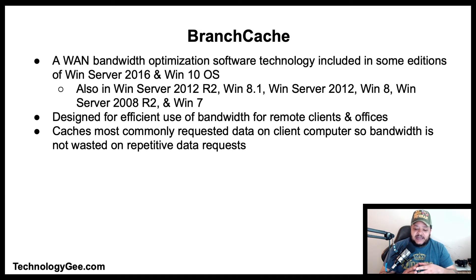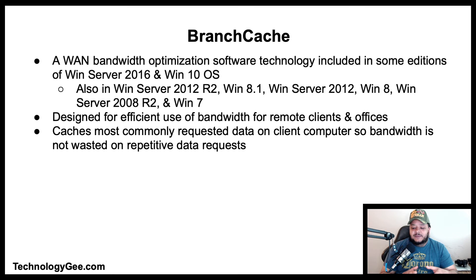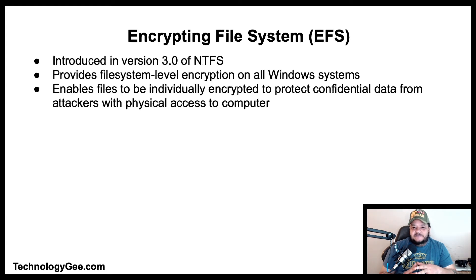BranchCache fetches content from your main office or hosted cloud content servers and caches the content at branch office locations, allowing client computers at branch offices to access the content locally rather than over the wide area network. In layman's terms, BranchCache caches the most commonly requested data on the client computer so that bandwidth is not wasted on repetitive data requests.